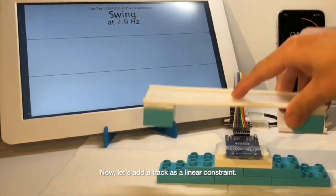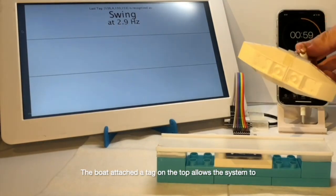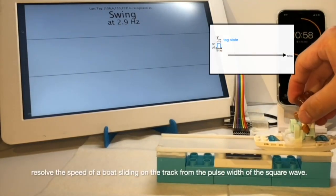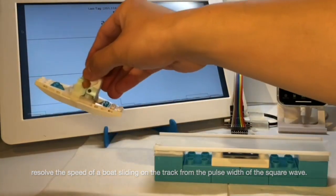Now, let's add the track as a linear constraint. The bolt attached to the tag on top allows the system to resolve the speed of the bolt sliding on the track from the pulse width of the square wave.